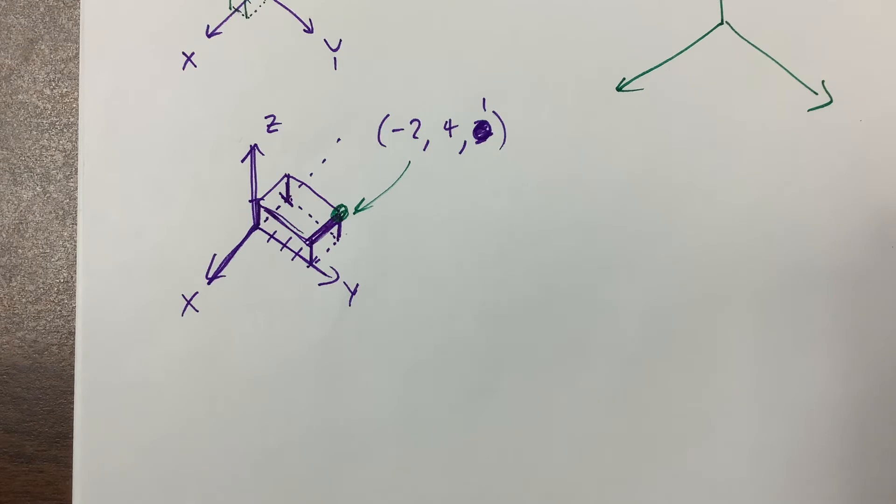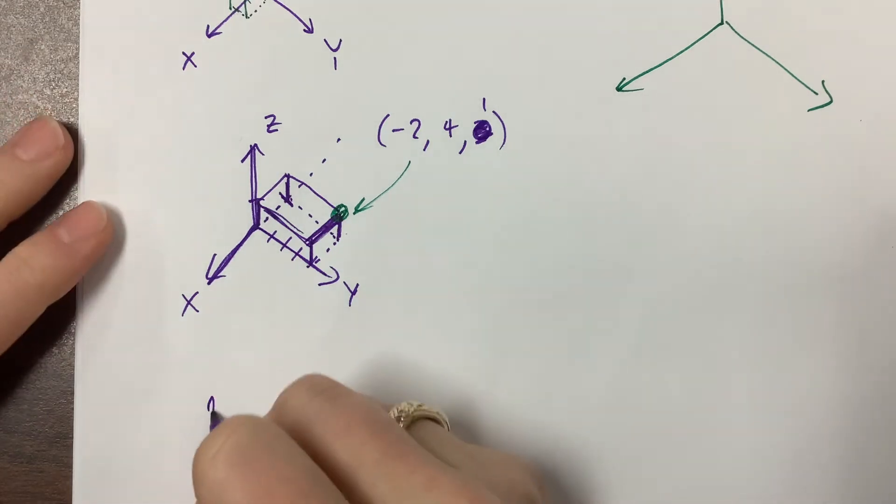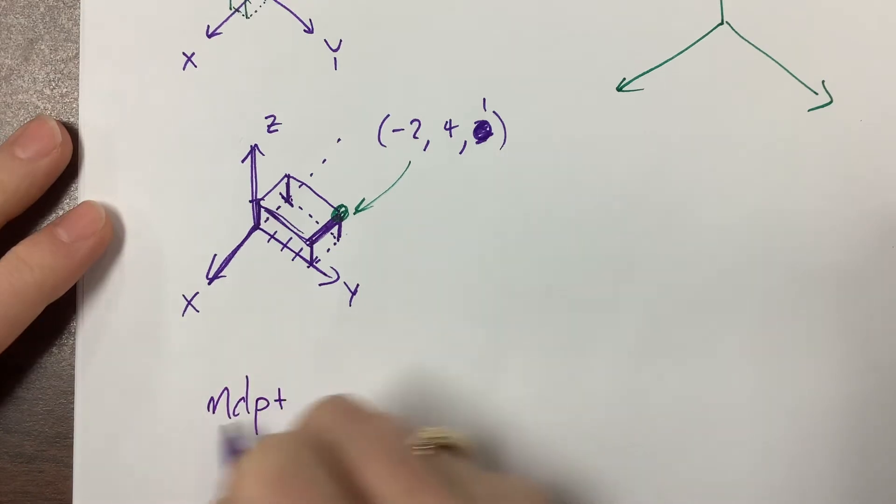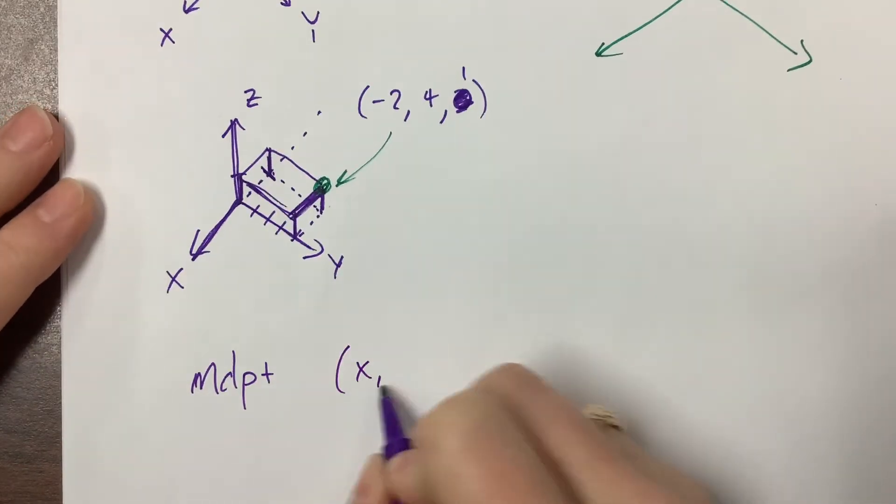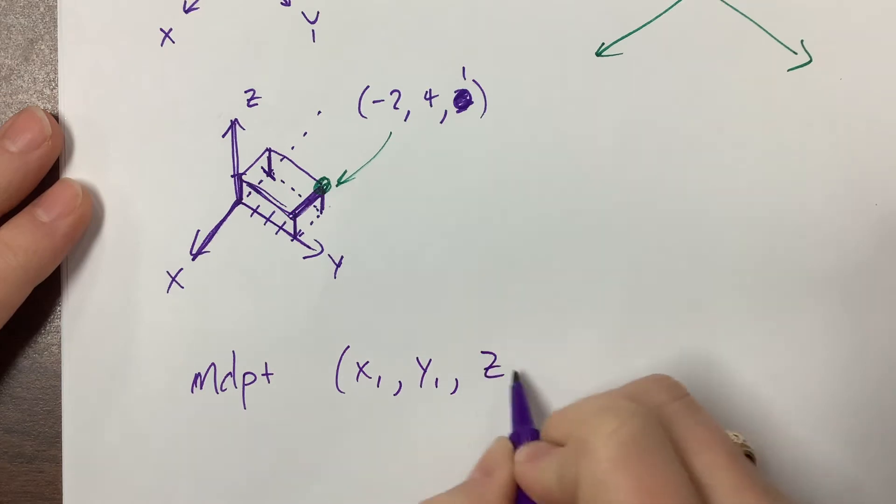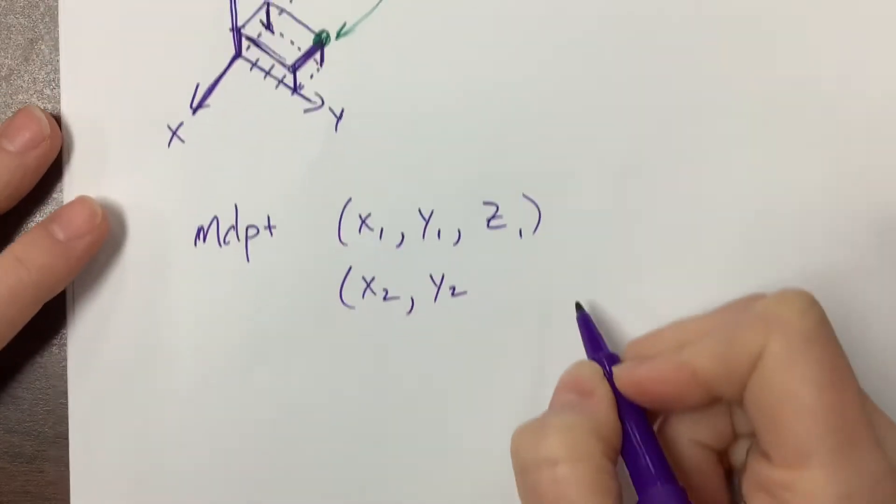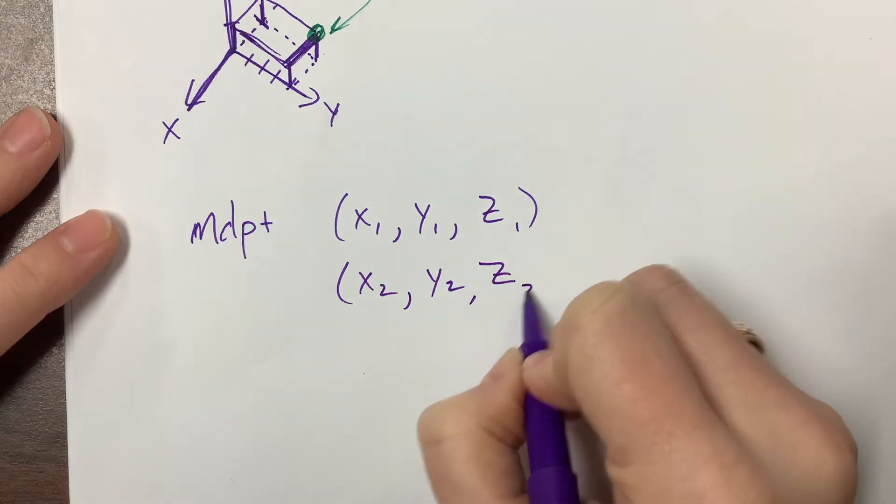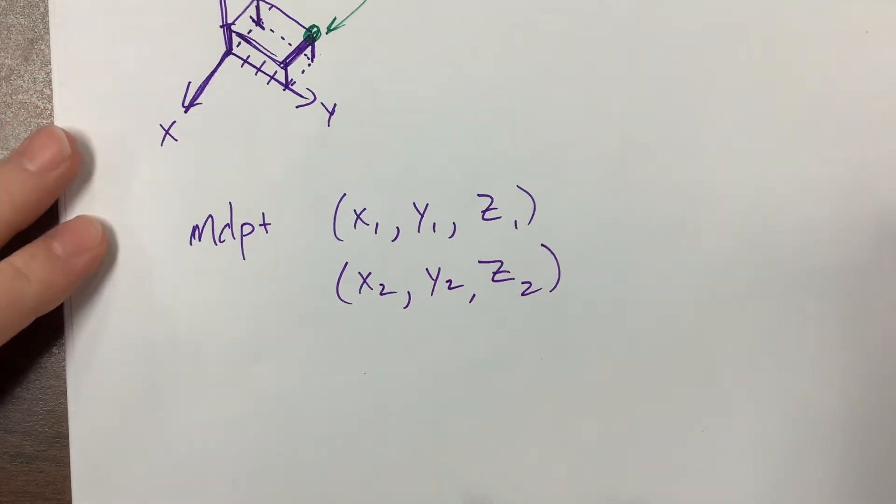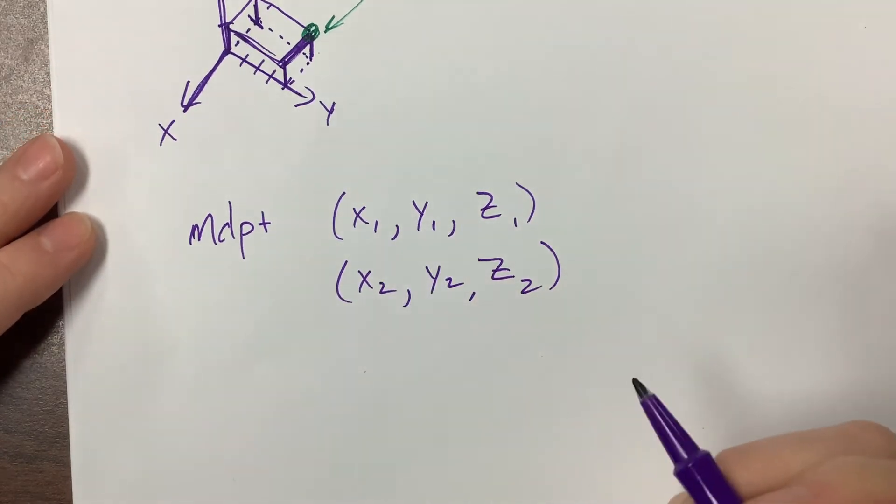The other thing that we look at is how to find the midpoint. If I've got x₁, y₁, z₁, and x₂, y₂, and z₂, what I need to do to find that midpoint is I need to take the average of the x's, the average of the y's, and the average of